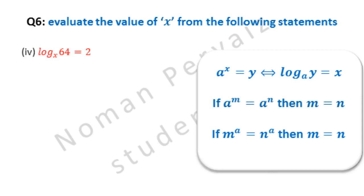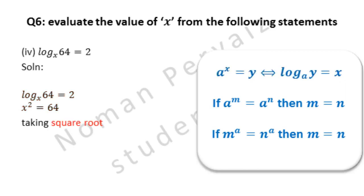We are going to solve part 4 of question number 6. Part 4 is: log base x of 64 is equal to 2. By applying the first property, this becomes x squared equal to 64. As we need the value of x, the square will be removed by taking the square root on both sides. The square and square root are cancelled, leaving only x. The square root of 64 is 8, so x is equal to 8. Hence, this is our answer.